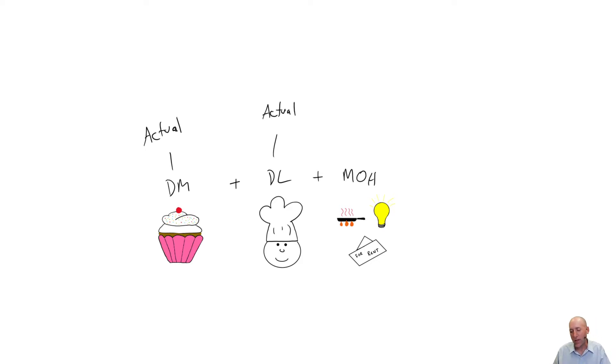But what we said was the overhead is way more difficult. You might not know your property tax bill or your utilities cost for a month and you got to figure out how much that costs per cupcake or per batch of cupcakes. It can be very difficult.